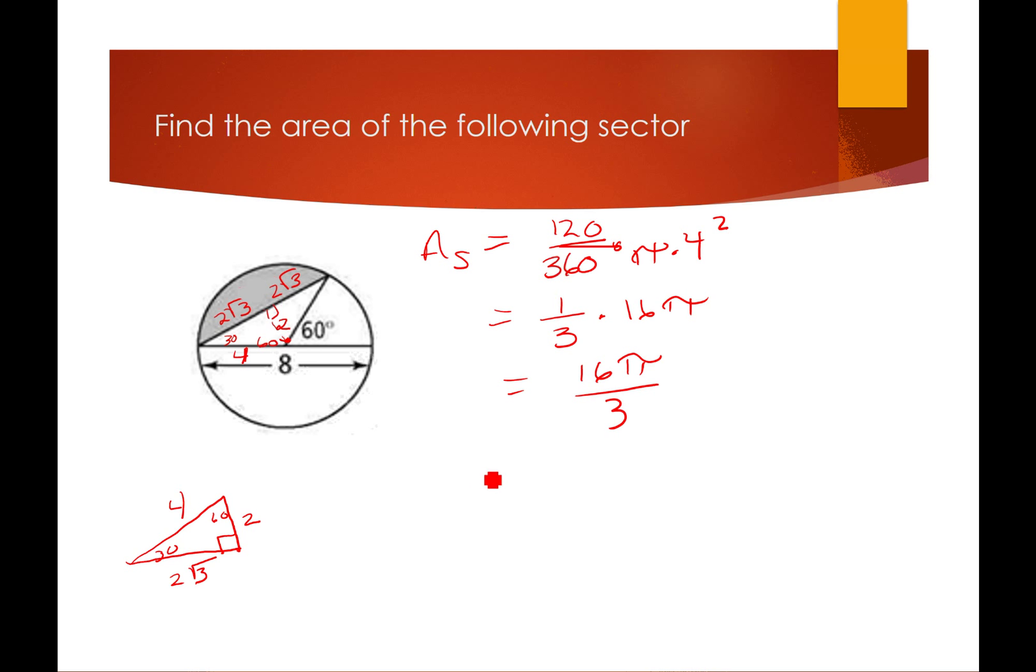Okay, so now my area of my triangle is going to be 1/2 times the base, which is 2√3 plus 2√3, which is 4√3, times the height of 2. So my area of my triangle is 4√3.